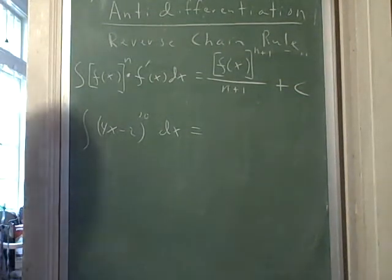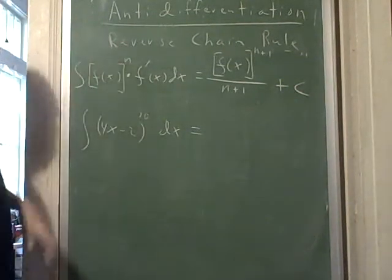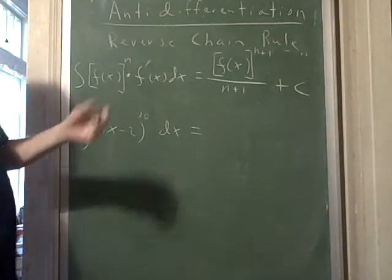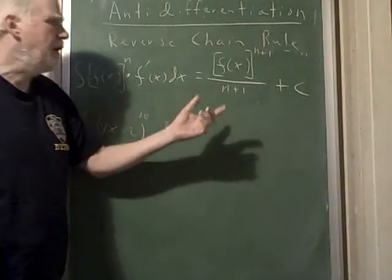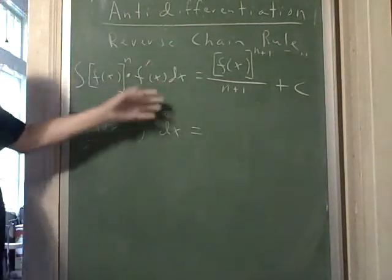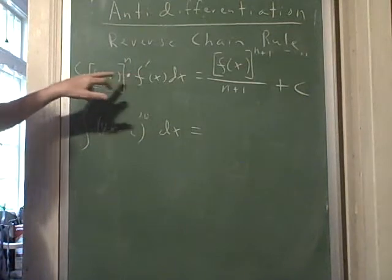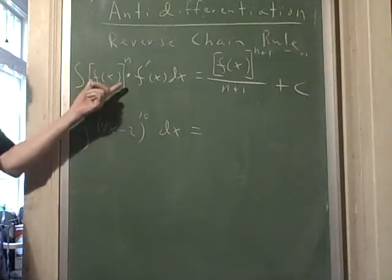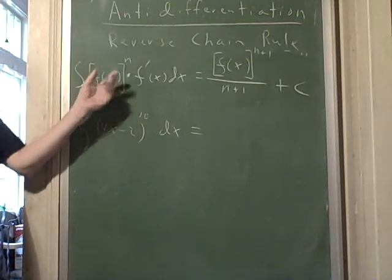Now we're going to look at another anti-differentiation problem using the reverse chain rule. We know when we take a function to a power, we add one, bring it out front, subtract one from the top, and you end up with f prime here. So when we take the antiderivative of f to the n,